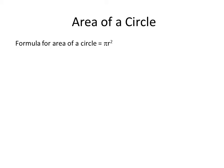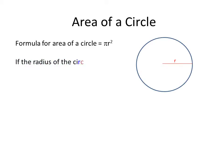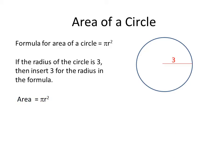Now we're going to talk about the area of a circle. The formula for the area of a circle is pi R squared. If the radius of the circle is 3, we insert 3 for R in the formula. Area equals pi R squared, so we get area equals pi times 3 squared, which equals 9 pi. An important thing to remember for the SAT is that you can leave it in terms of pi — you don't need to calculate it out as 3.14. You can just leave it as 9 pi.